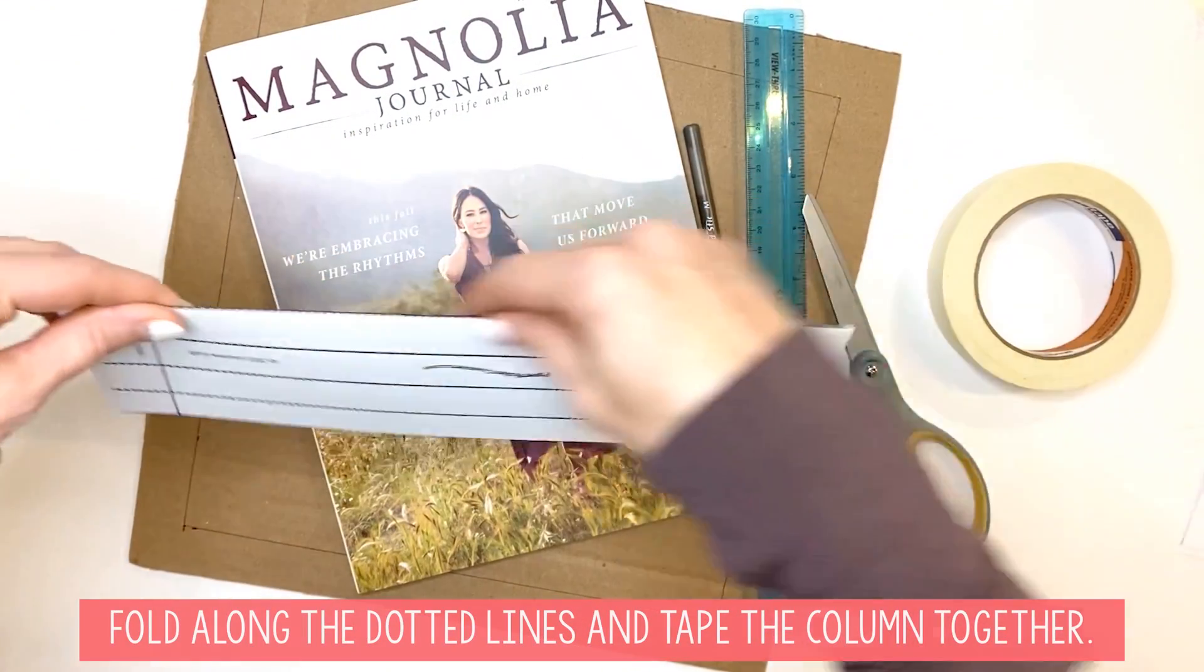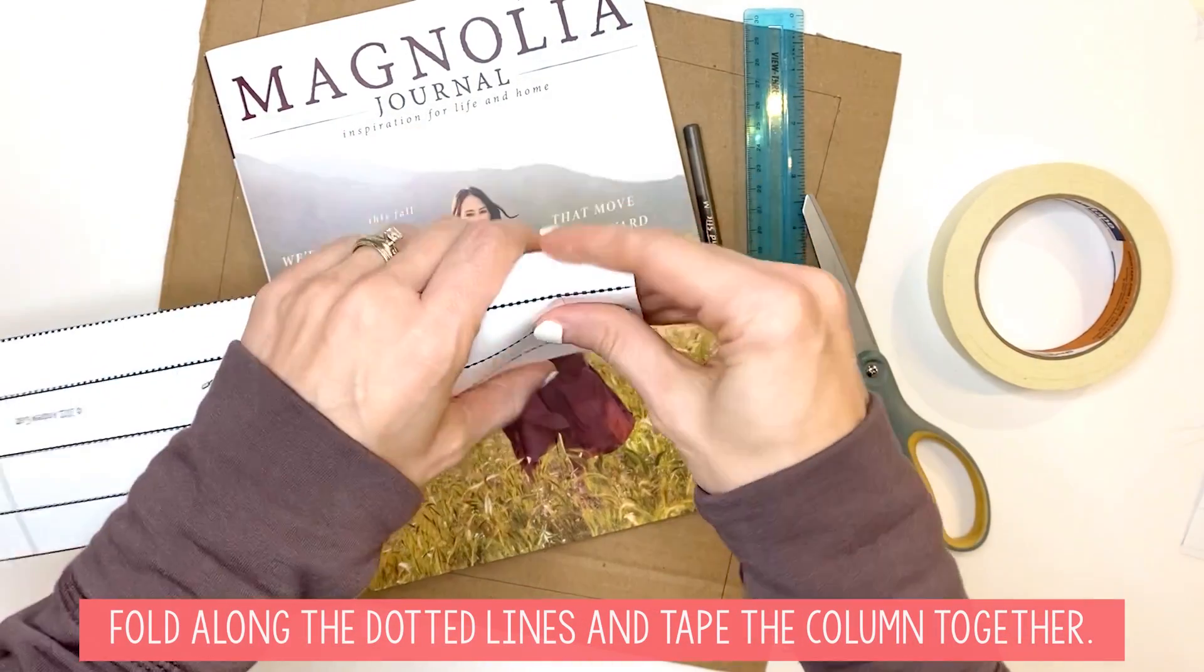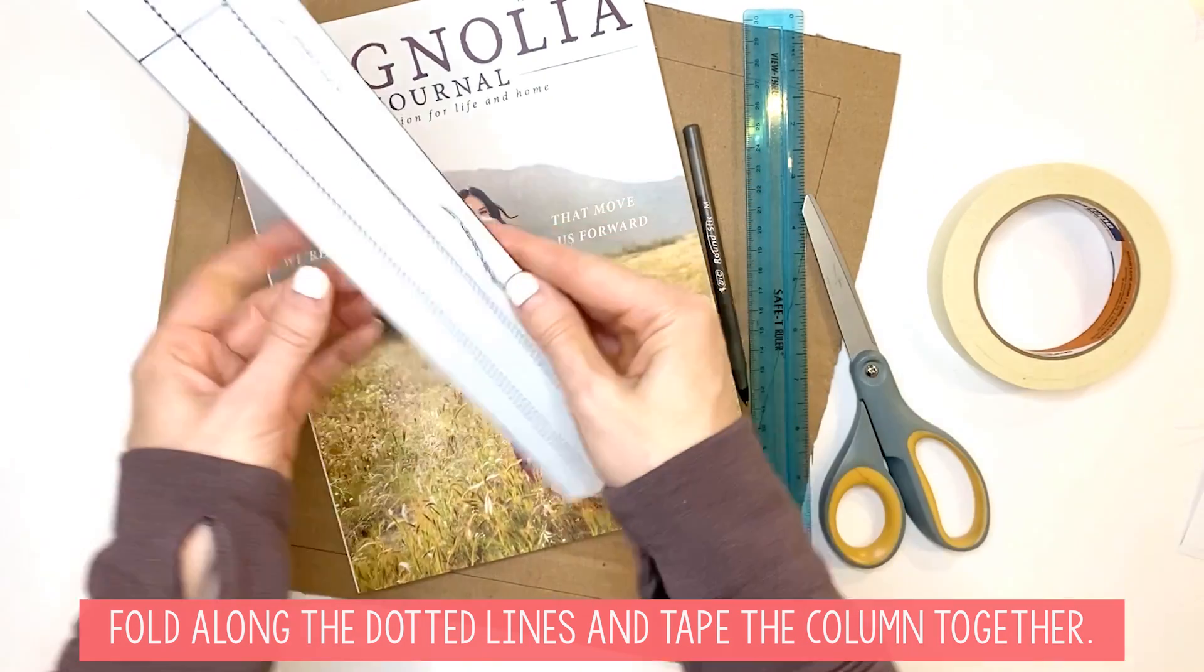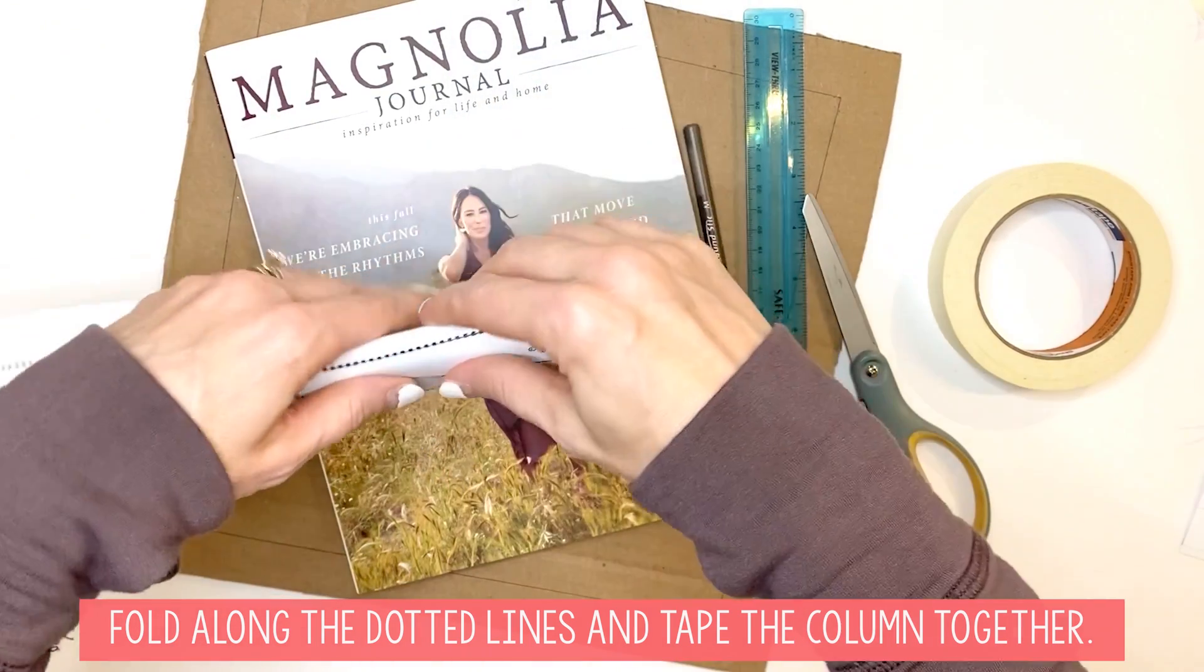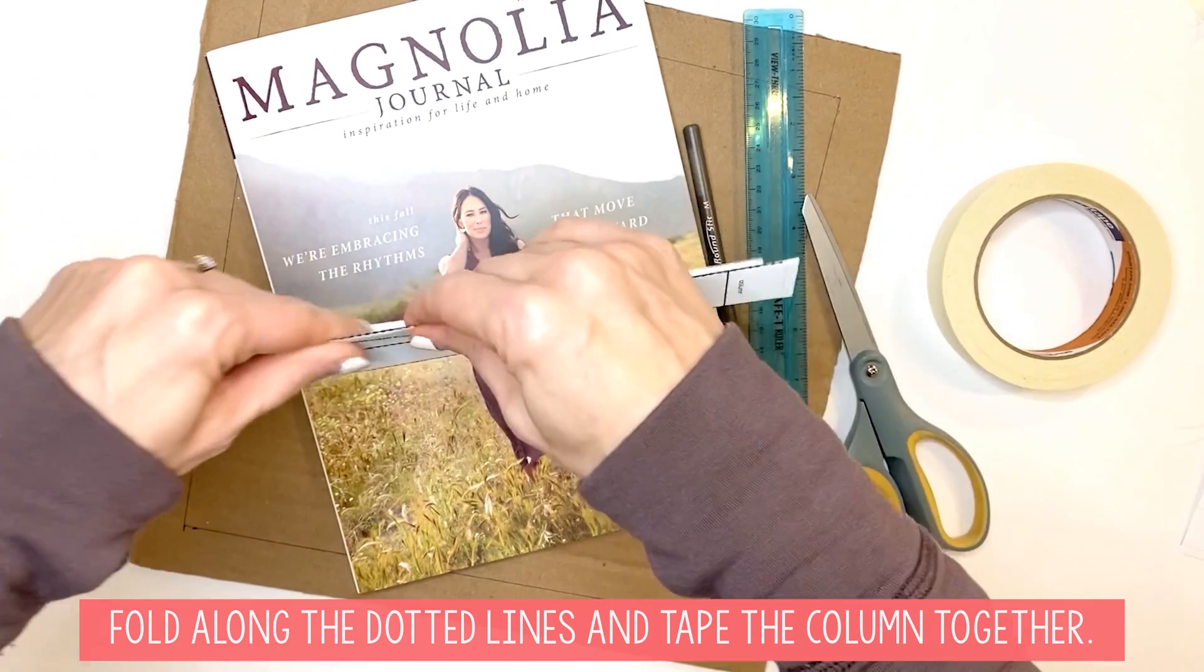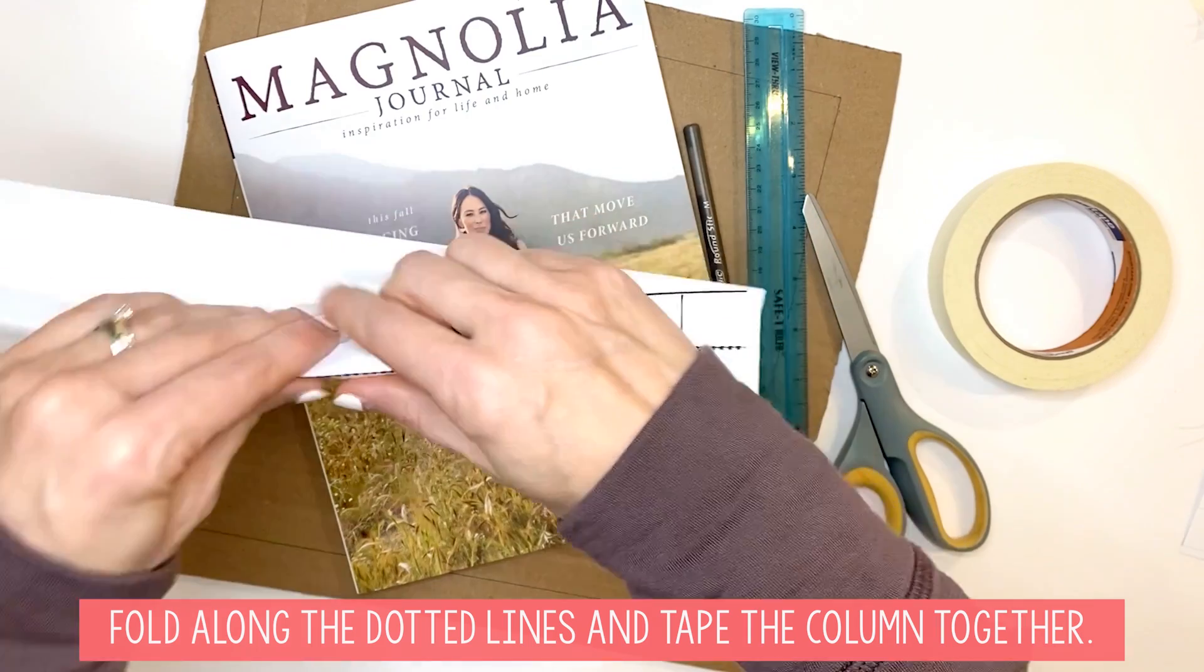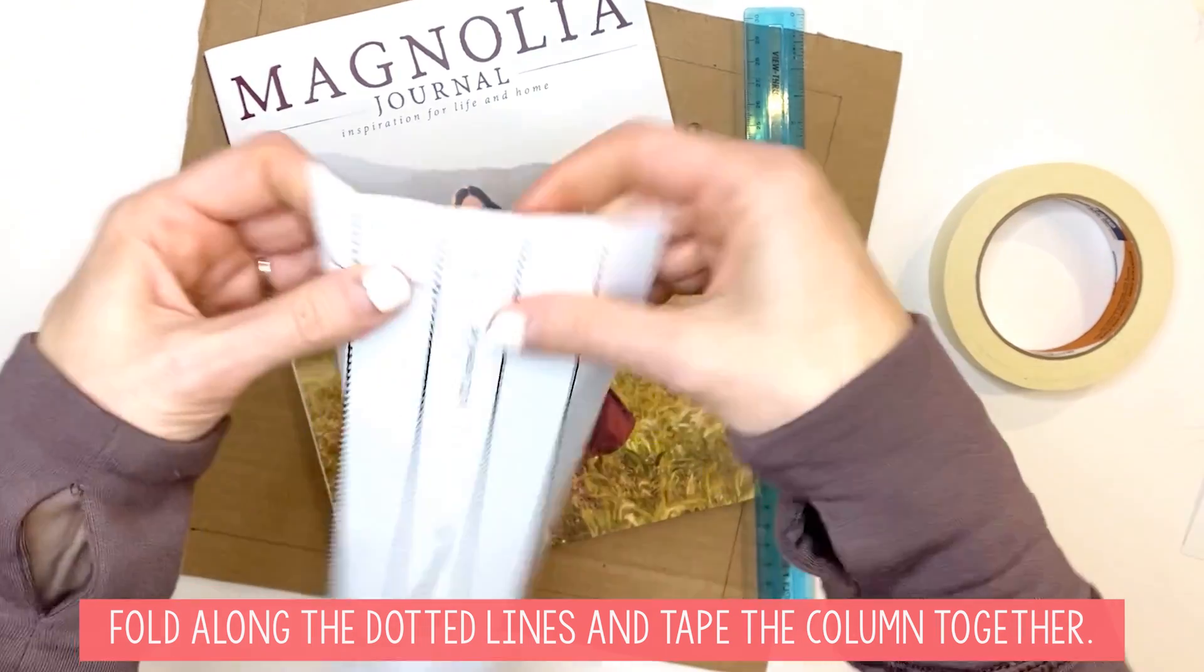...you're going to take it and fold it. Now see how nice and easy that is, folding into a nice crisp clean line? If I wouldn't have scored those lines with my pen, this would be much harder to get into a straight line and it could end up being crooked. So scoring is very important. Take the bottom piece down here, also fold that, and then fold it all together like this so that...